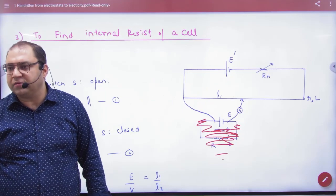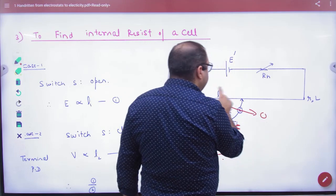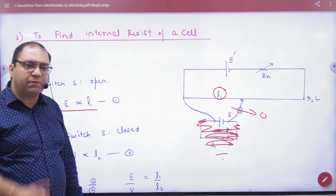Because you have done something on it, so now this cell is connected. Think that it balanced at length L1. So according to the principle of potentiometer, E is proportional to L1.